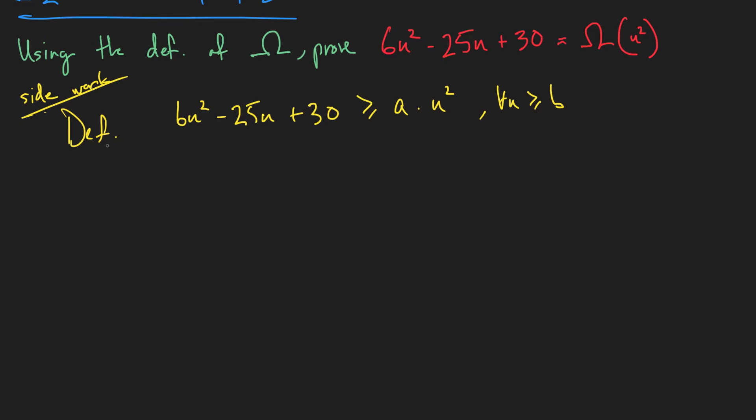Now, just like we've done before, let's try something. Let's try a equals to 1. Now, let's plug that in and see what it looks like. So we have 6n squared minus 25n plus 30 is greater than or equal to n squared for all n greater than or equal to b.